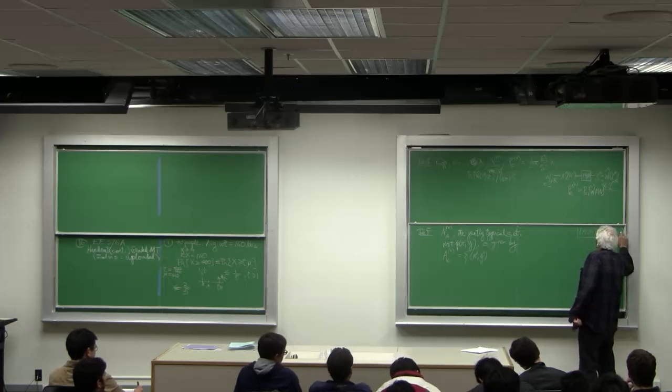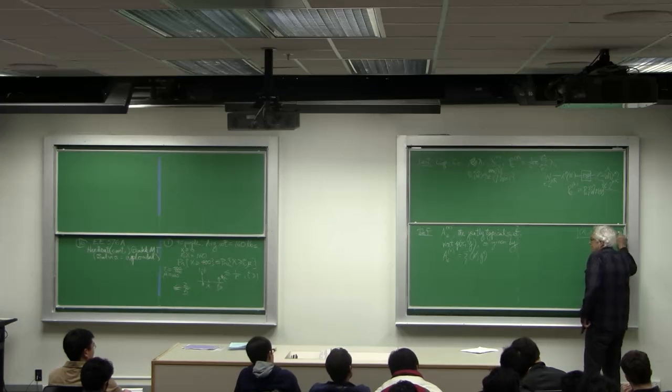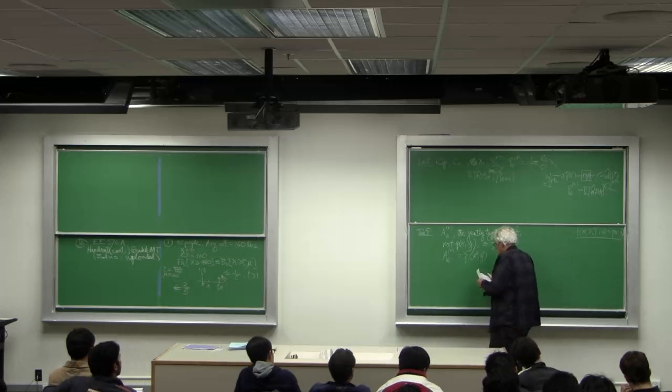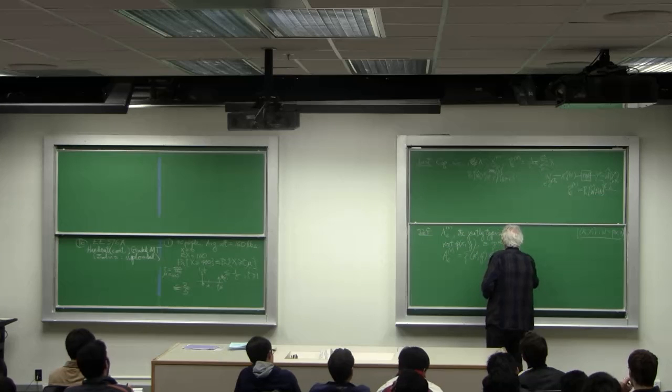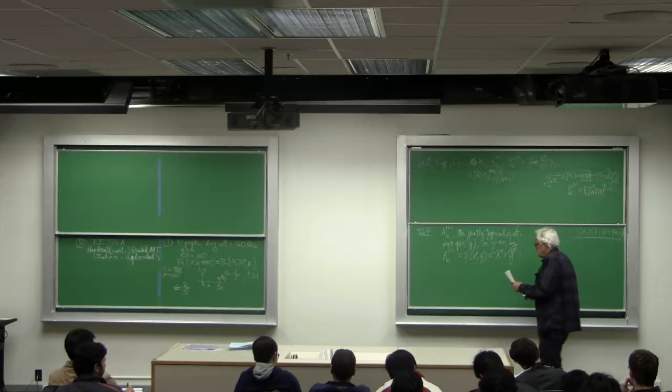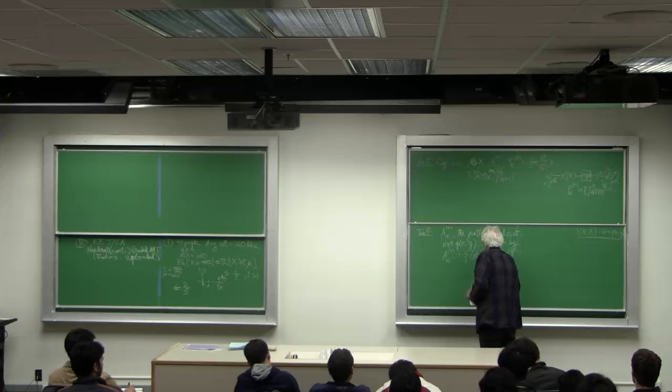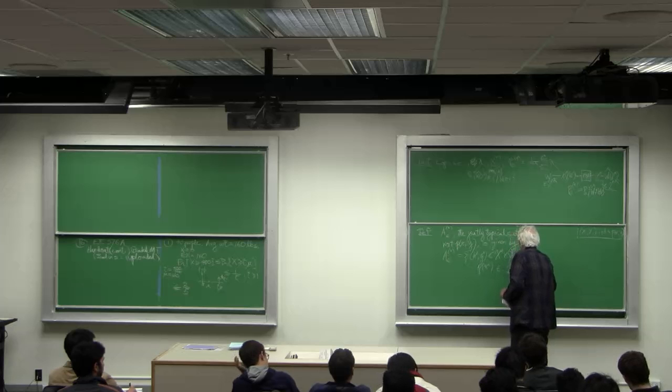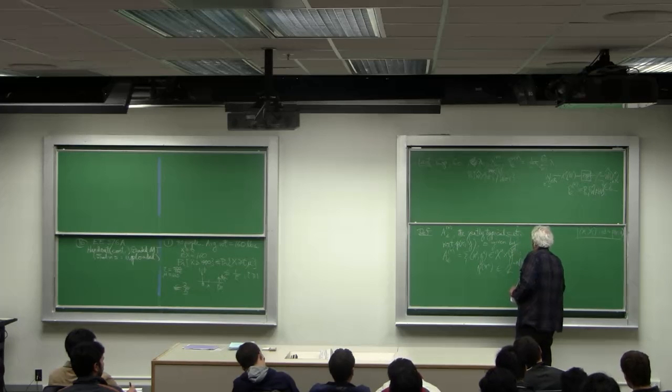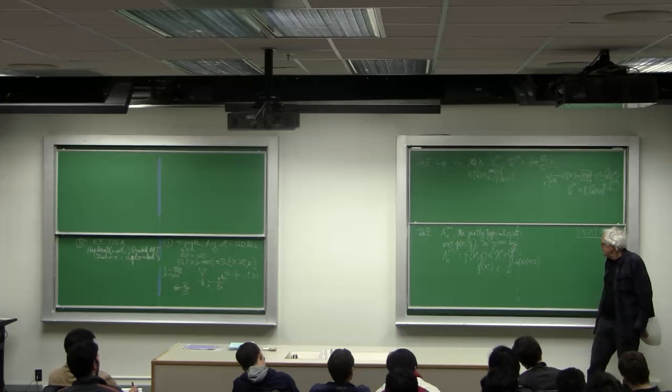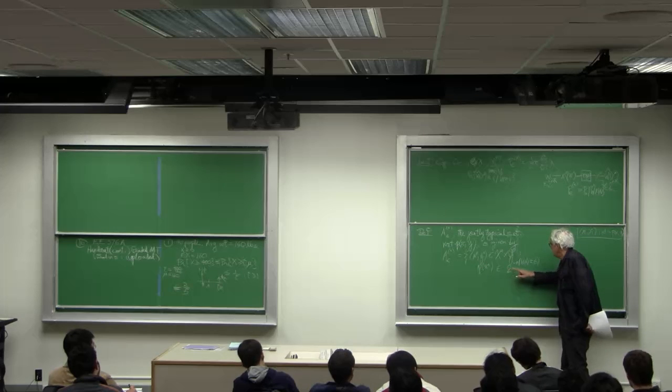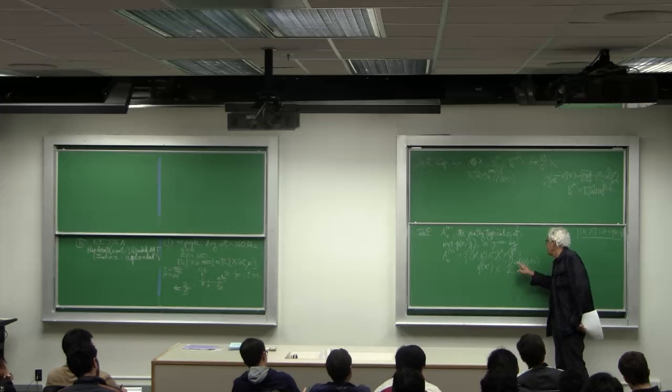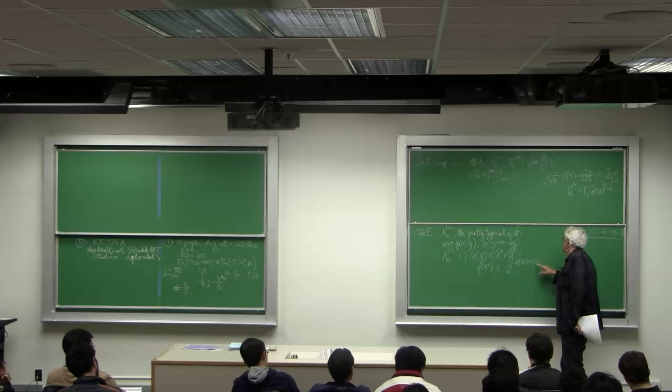With respect to p of x y, then I would expect them to be individually typical and jointly typical which is to say that p of x super n is in the set 2 to the minus n h of x plus or minus epsilon. I like this notation. It says this real number lies in the interval defined by 2 to the minus n h plus epsilon and 2 to the minus n h minus epsilon.